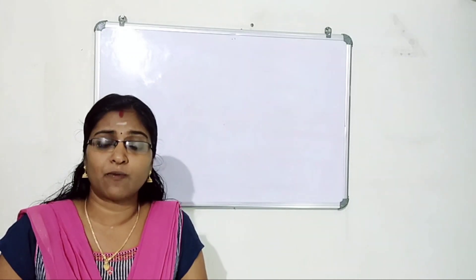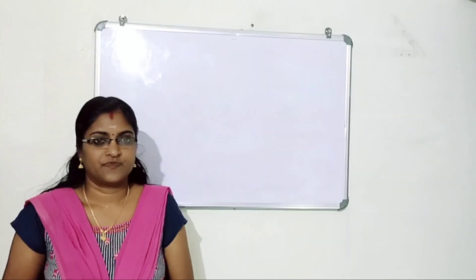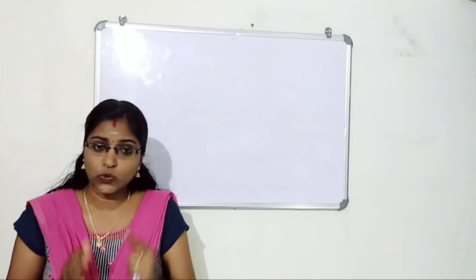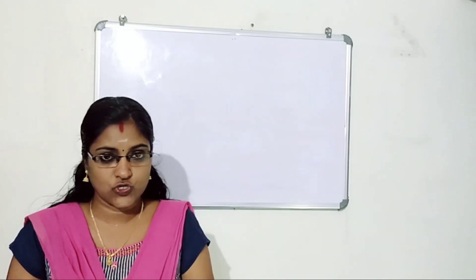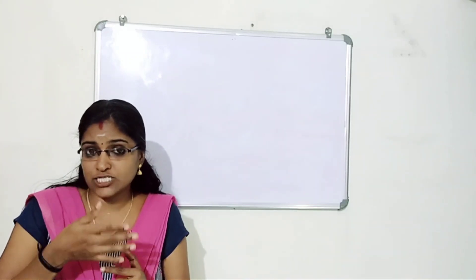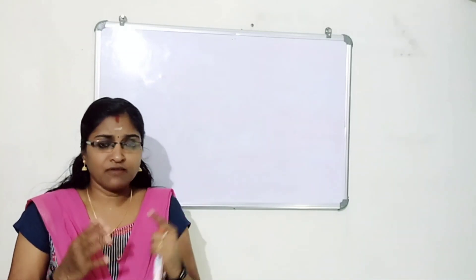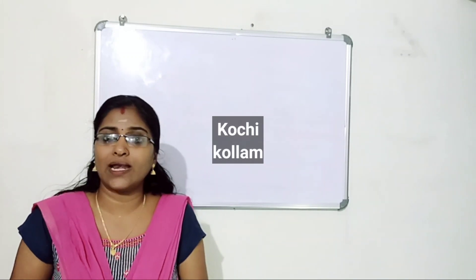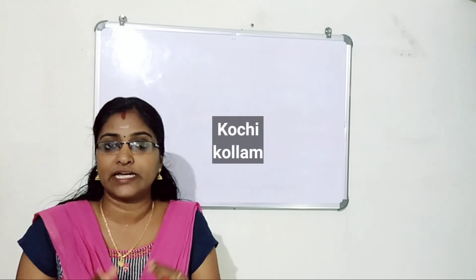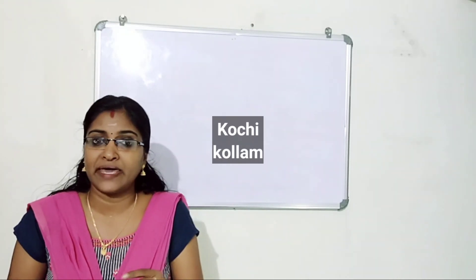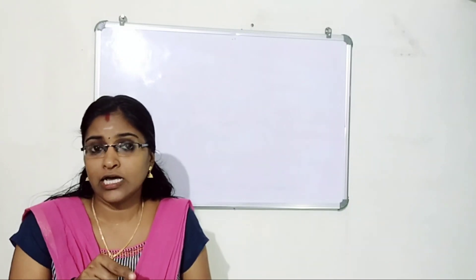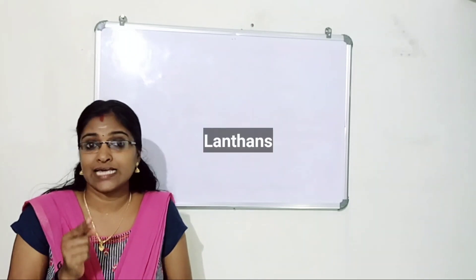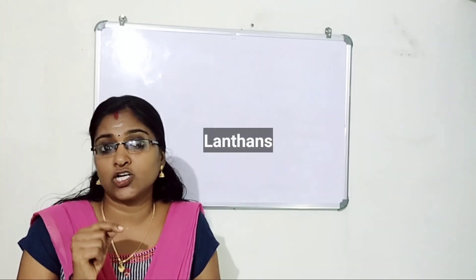Our topic is the Dutch. The Dutch were another European force who reached India following the Portuguese. Which were the major trade centers of Dutch? No doubt, our Kochi and Kollam were the major trade centers of the Dutch. The Portuguese were known as Parangis, but at the same time the Dutch were known as Lanthans.